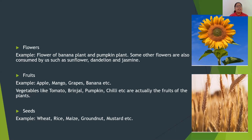The next plant part consumed by us is seeds. These are food-storing seeds which are taken up by us. Examples of such seeds are wheat, rice, maize, groundnut, mustard, etc.